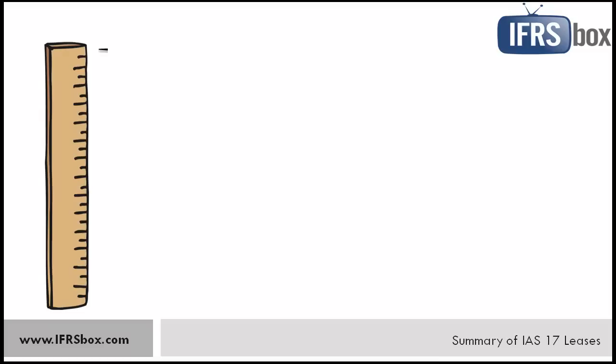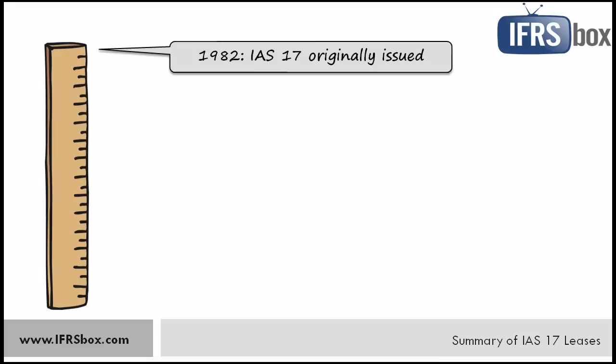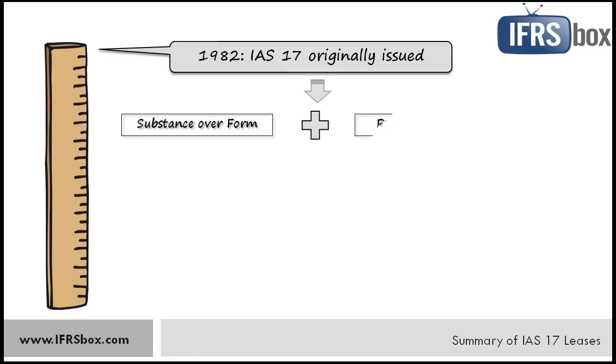IAS 17 was originally issued in 1982 and it was the first IAS standard that applied the concept of substance over form and the present value basis of measurement — meaning discounting techniques and so on.